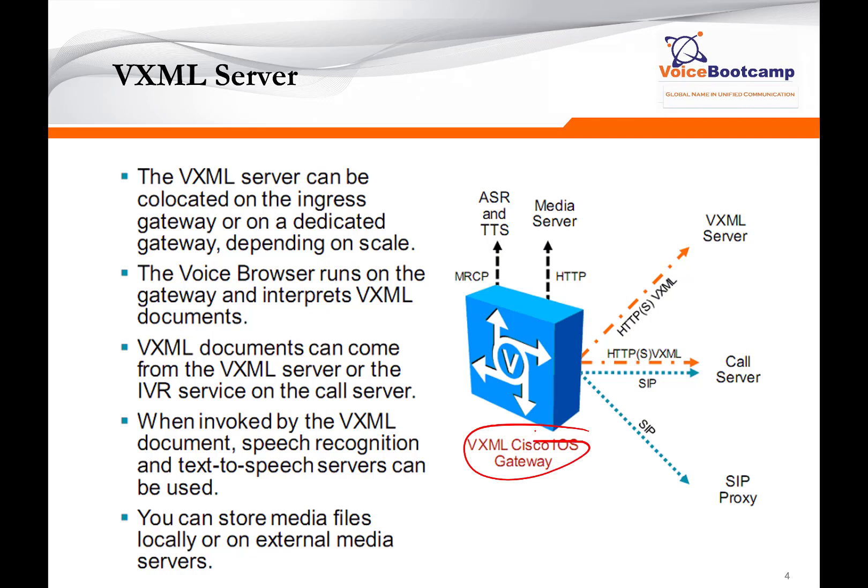The VXML gateway is a Cisco router with VXML capability, acting as what we call a voice browser. Think about when you want to go to the Google web page — you're trying to talk to a web server residing on the Google data center. You open up your web browser, which is Internet Explorer, Firefox, or Chrome, and you type an address. That address is then sent to Google using a protocol we all know as HTTP. Google will then process and send some programming code, which your web browser will execute and interpret, showing you the visible result on your web page.